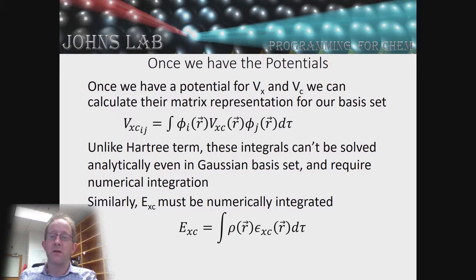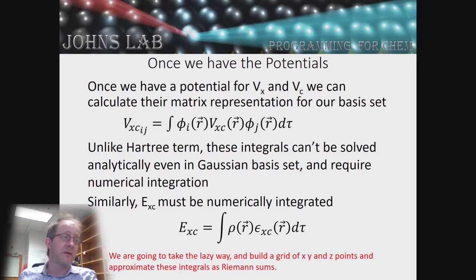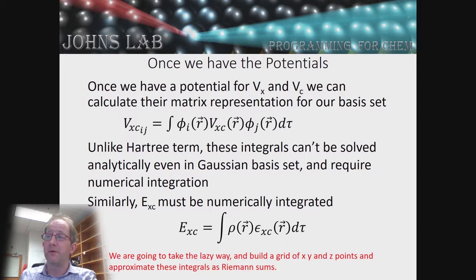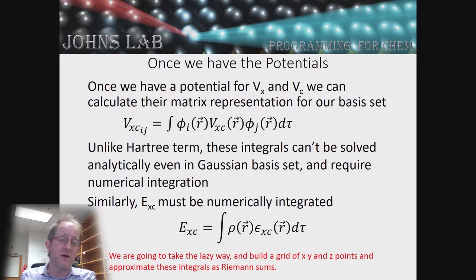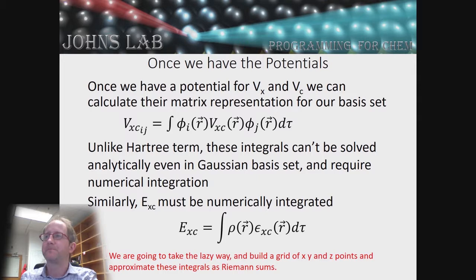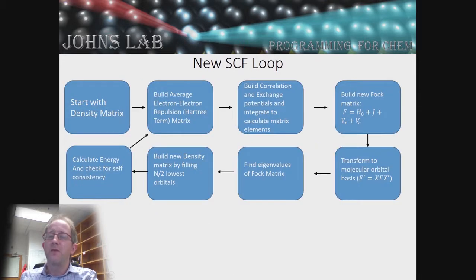We're going to do this the simplest way possible: rather than use faster but more complex methods, we'll just build a grid of x, y, z points and approximate these integrals as Riemann sums over the grid. There are much faster ways to do this, but for our small simple system this will work reasonably well.